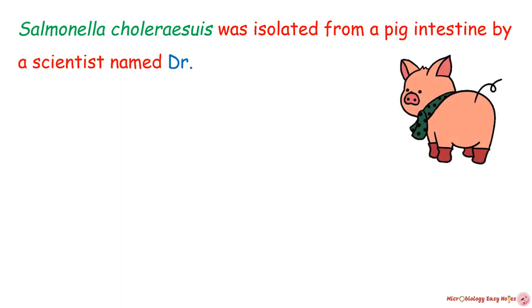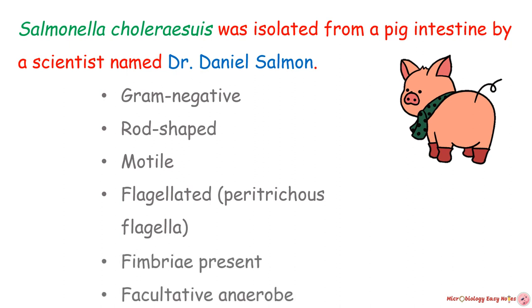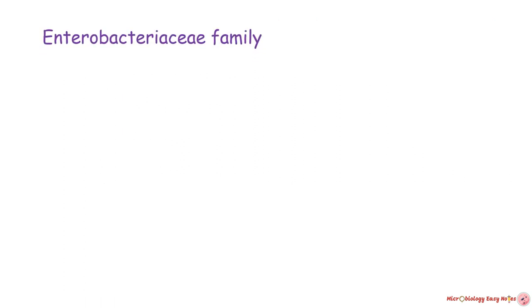Salmonella choleraesuis was the first species isolated from pig intestine by scientist Dr. Daniel Salmon. It is a gram-negative, rod-shaped, motile, flagellated bacteria. Multiple flagella are present around the cell — this arrangement is called peritrichous flagella. Fimbriae are also present in salmonella bacteria, and it is a facultative anaerobe, meaning it can grow with or without oxygen.